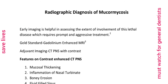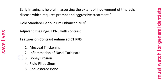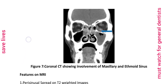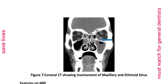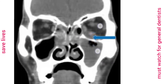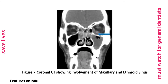Radiographic diagnosis of Mucormycosis is very important because early imaging is useful in assessing the extent of involvement of this lethal disease, which requires prompt and aggressive treatment. The gold standard radiography is gadolinium-enhanced MRI; adjuvant imaging is CT of paranasal sinuses (CT-PNS) with contrast. Features on contrast-enhanced CT-PNS include mucosal thickening, inflammation of nasal turbinate, bony erosion, fluid-filled sinus, and sequestrated bone. Here, a coronal CT shows involvement of maxillary and ethmoidal sinuses.